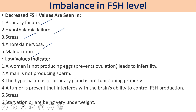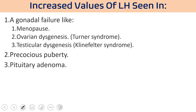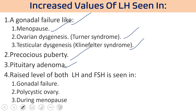High FSH value in children may indicate that puberty is not about to start. Decreased levels of FSH are seen in pituitary failure, hypothalamic failure, stress, anorexia nervosa, and malnutrition. Anorexia nervosa — a condition involving fear of gaining body weight and not getting proper food — can lead to low FSH. Low FSH can cause women not producing eggs, prevention of ovulation leading to infertility, or men not producing sperm. It can also indicate a hypothalamus or pituitary gland not functioning properly, tumor, starvation, or stress.